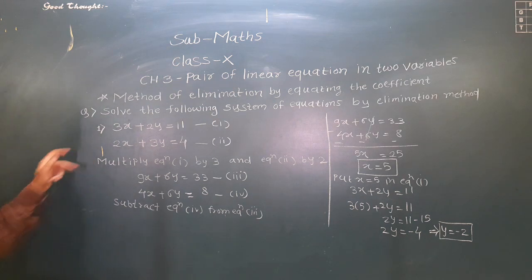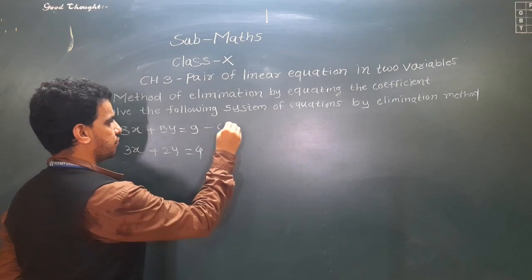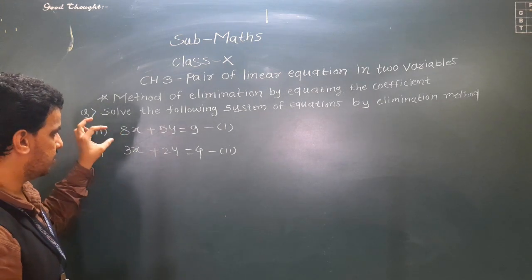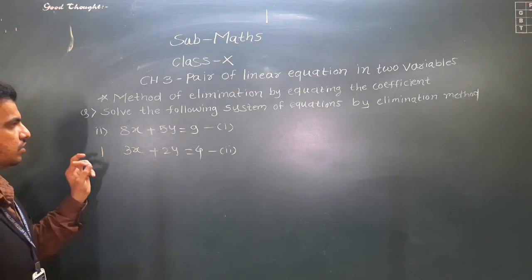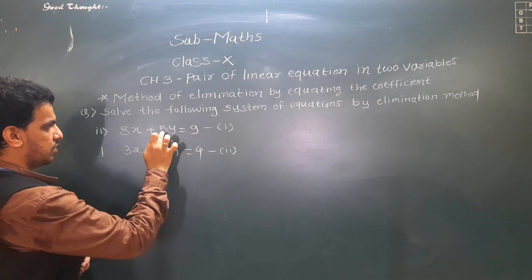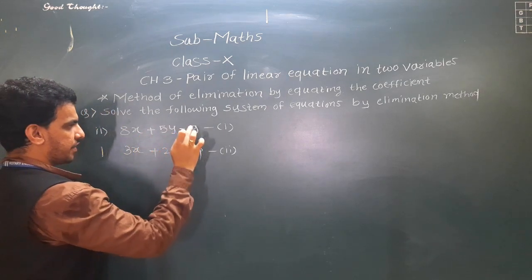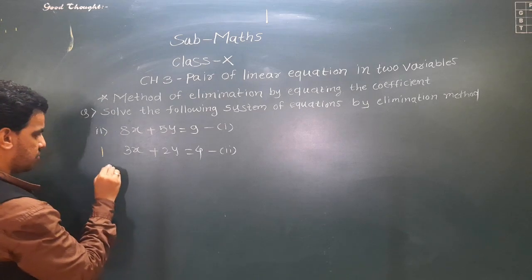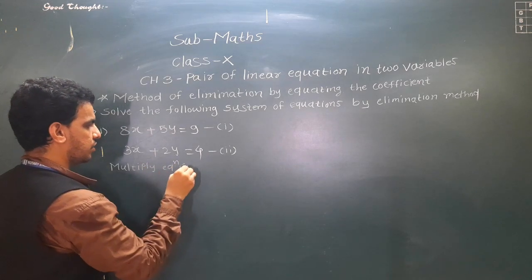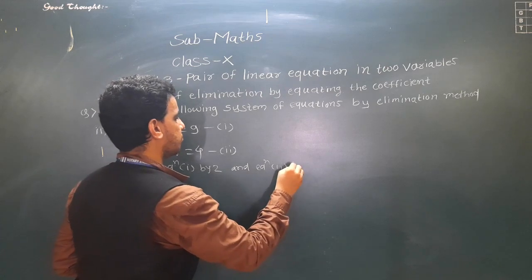Similarly, for the second example: equation 1 is 8x + 5y = 9 and equation 2 is 3x + 2y = 4. We choose to equate the coefficients of y. The coefficient of y is 5 in equation 1 and 2 in equation 2. The LCM of 5 and 2 is 10, so we multiply equation 1 by 2 and equation 2 by 5.